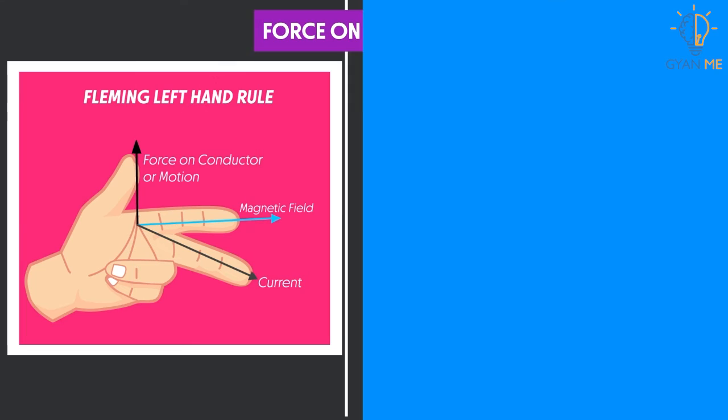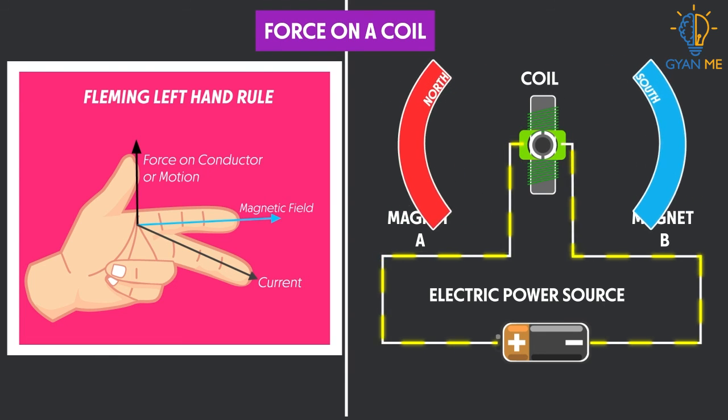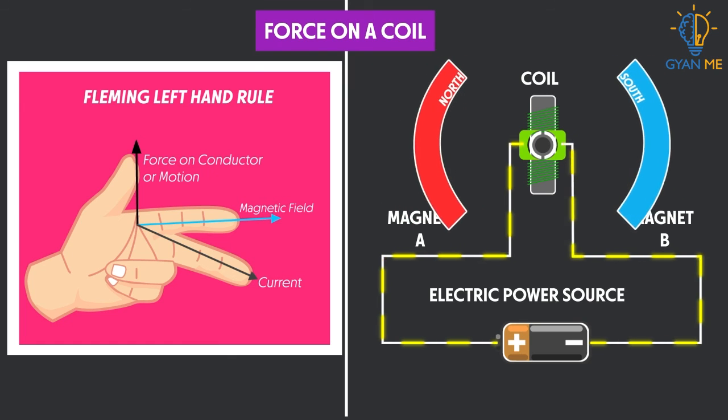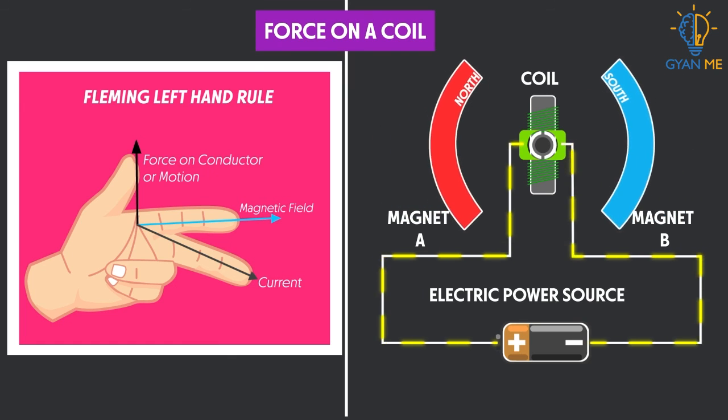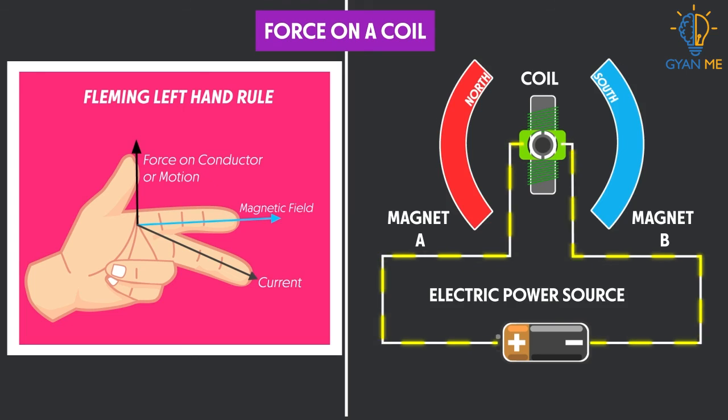Students, here we saw that a coil moving between poles of stationary magnets produces a force which is used to produce mechanical rotation. Can you think of a situation where magnets are moved, keeping the coil steady to produce electric current? Don't worry, we will see this in our next video.